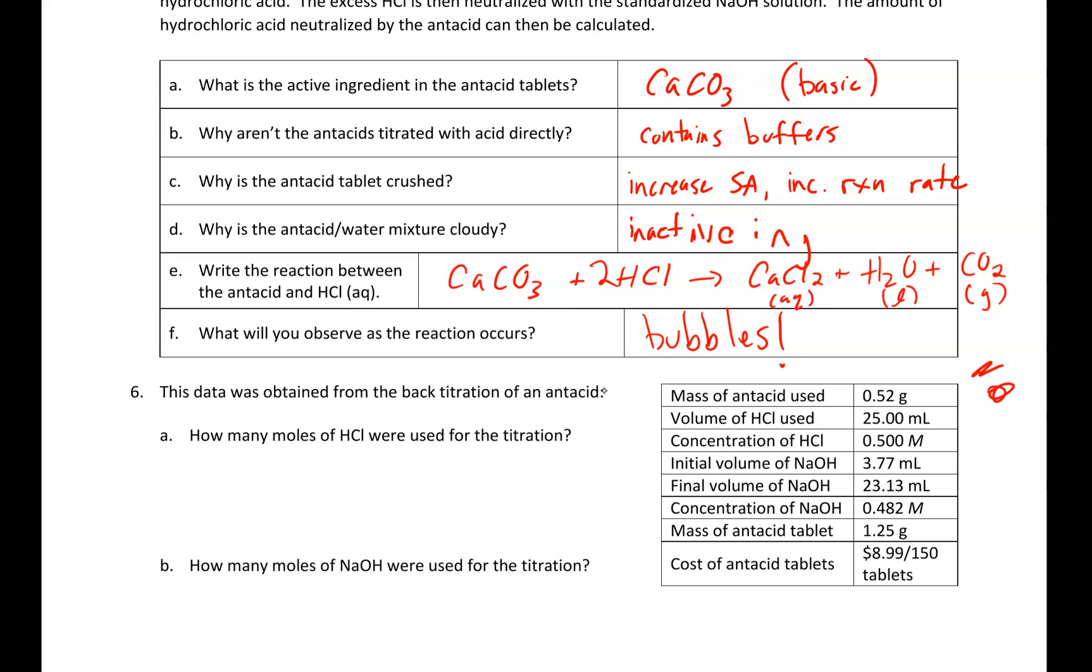So basically, I'm going to take my crushed up antacid tablet. I'm going to put a bunch of acid on top of it. I'm going to effectively drown my antacid tablet and destroy the buffer system. Since the calcium carbonate is basic, it's going to neutralize some of the hydrochloric acid. But it cannot neutralize all of it. The excess acid, the acid that was not neutralized by the calcium carbonate, is going to be titrated against the sodium hydroxide.